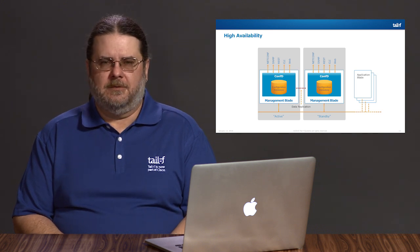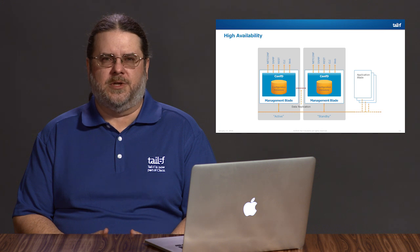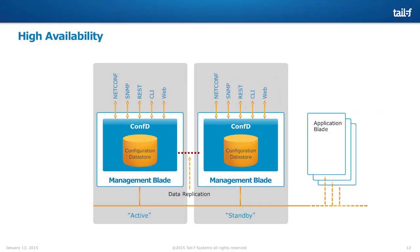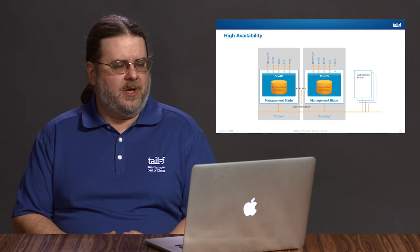Now, high availability. Many systems out there need to be redundant for five nines or six nines reliability — where you'll commonly have an active management card in your system and some number of standby management cards in case of failover. What ConfD focuses on for high availability is replication of the data. ConfD supports one-to-N replication — you can have one active ConfD and any number of standby ConfDs running. As transactions commit on the master ConfD, those configuration change transactions will be replicated to any standby ConfDs.